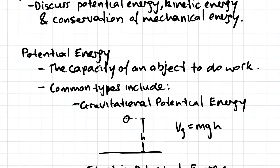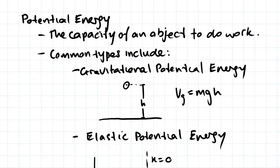We'll start off by having a look at potential energy. Potential energy is defined as the capacity of an object to do work. Common types include gravitational potential energy and elastic potential energy. I'll just talk a little bit about gravitational potential energy.